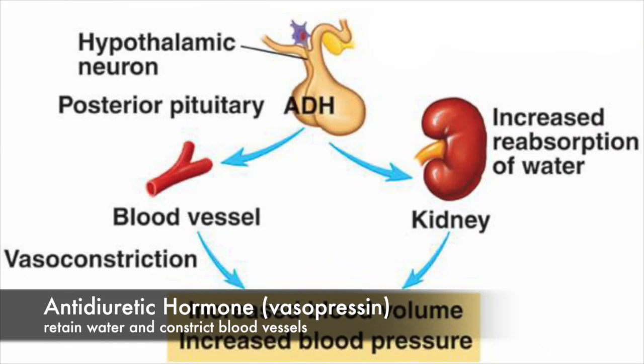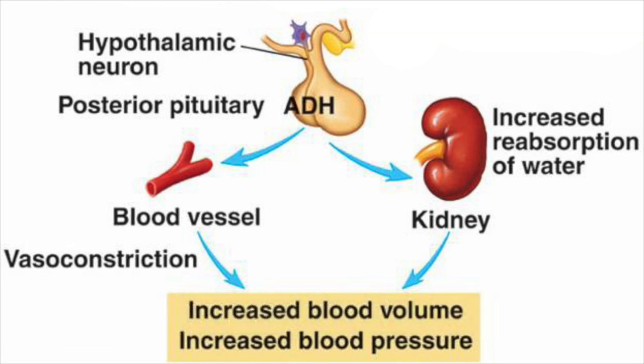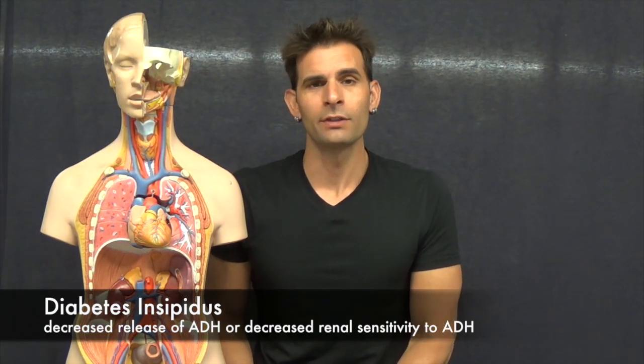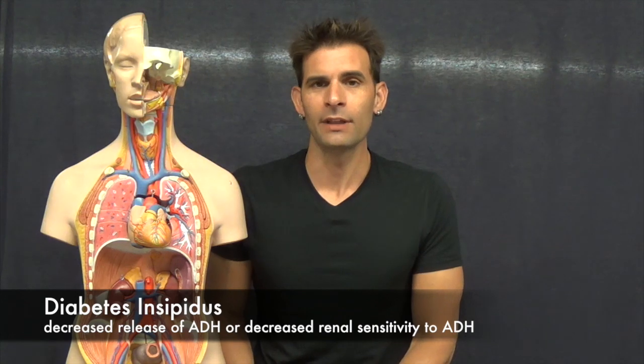The two primary functions of antidiuretic hormone are to retain water in the body and constrict blood vessels, thereby increasing blood pressure as well as blood volume. A hyposecretion of antidiuretic hormone results in a disease known as diabetes insipidus.